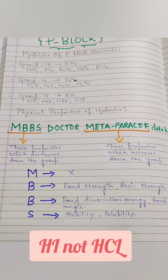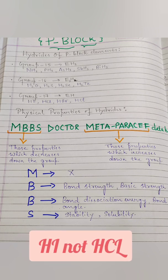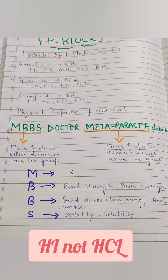Now let's talk about physical properties of hydrides. There is one simple trick you need to remember: MBPS Doctor Meta Parasave Deeta Hai. In this, MBPS — M gives you nothing to memorize. B gives you two things to remember: Bond strength and Basic strength.